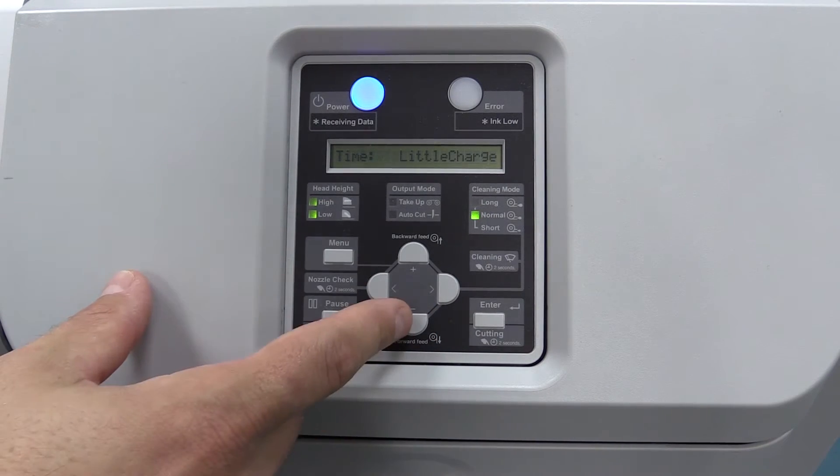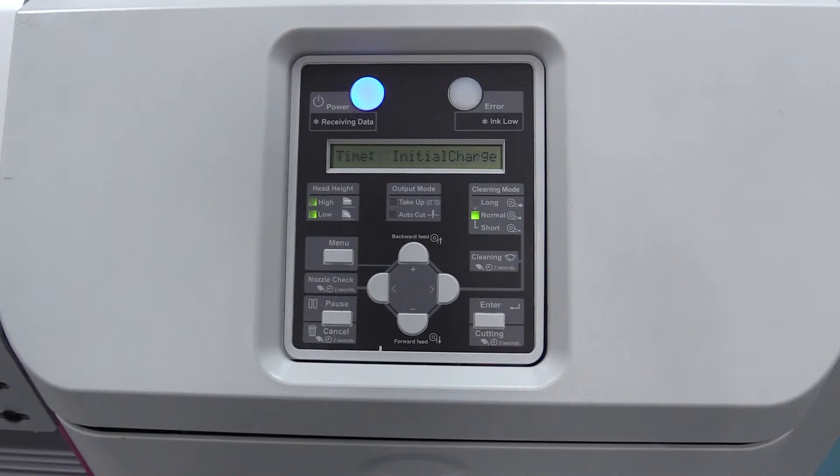The next two are a little different: Little Charge and Initial Charge. You'd use Little Charge if you're transitioning from the 440 mL cartridges to the 950 mL adapter and bag system. This charges the length of tubing installed on the adapter to make sure the entire system is fully charged with ink.